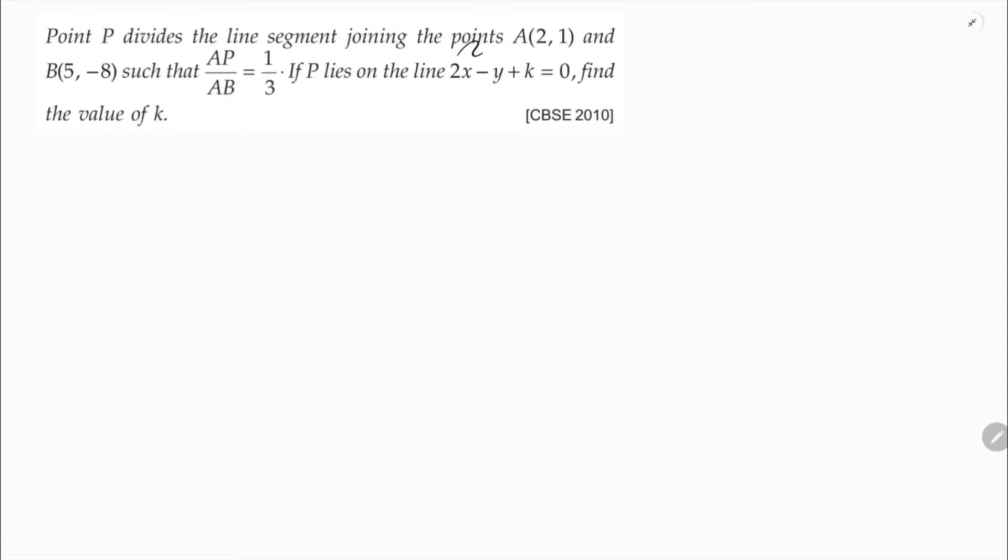Point P divides the line segment joining A and B. A is 2 comma 1, B is 5 comma minus 8. Point P divides line segment AB such that AP by AB is 1 by 3.